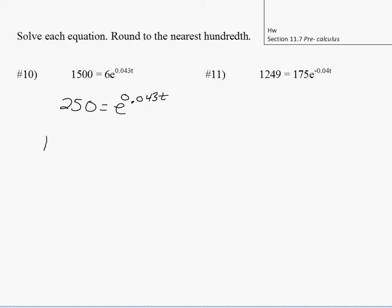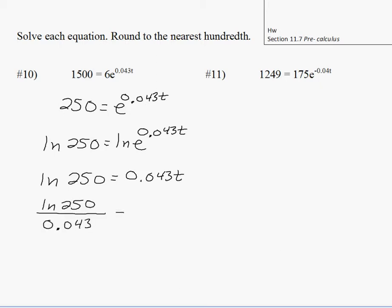We could then apply natural log to both sides of the equation. On the right side, since our logarithm, natural log, has a base of e, and our argument also has a base of e, the right side just becomes the exponent. You could then divide both sides by the coefficient of t. Put that in your calculator. You get 128.41 is what t is to the nearest hundredth.